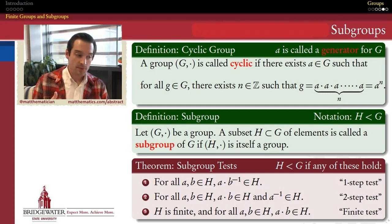So depending on the situation, some of these are easier to check and to verify and to use in proofs than others. But all three of them have equal explanatory power. If any one of them is satisfied, then all three of them are satisfied. And, more importantly, that makes H a subgroup of G.